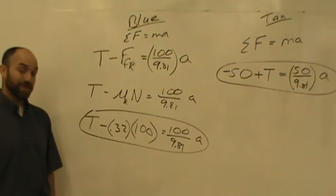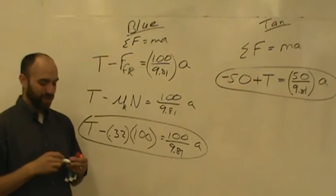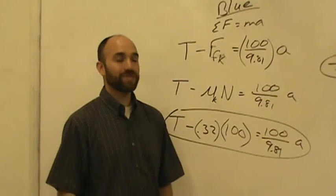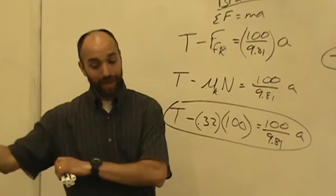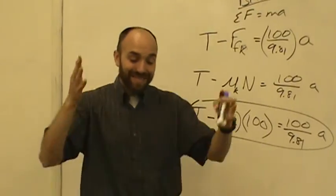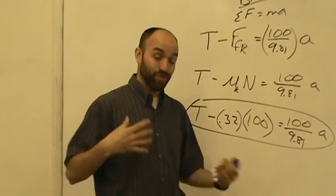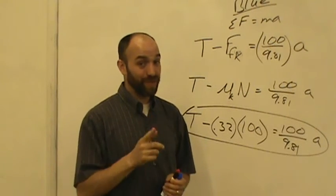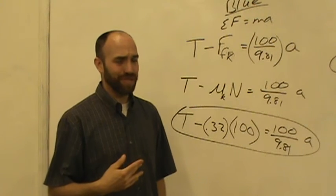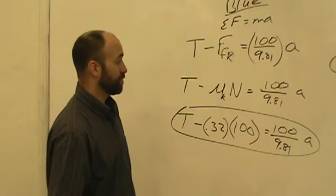Physics at this point is done — setting up the equations is the trick. Students have told me physics is hard because they struggle setting it up, but once it's set up they can do the math. Of course you can do the math — that was a different class. Setting it up, that's the physics. That's what's new and what you have to learn. Getting to this point — two equations, two unknowns — that's where the physics lives.